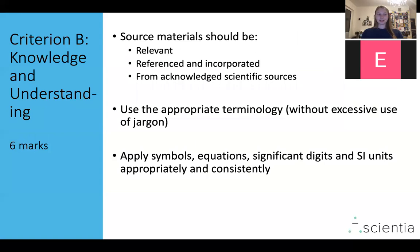Criterion B is Knowledge and Understanding, worth six marks. Your source materials should be relevant, referenced, and incorporated clearly into your background information, making sure they actually further your argument. They should come from acknowledged scientific sources so they are reputable. Use appropriate terminology, but avoid excessive jargon. Apply symbols, equations, significant digits, and SI units appropriately and consistently throughout your report.